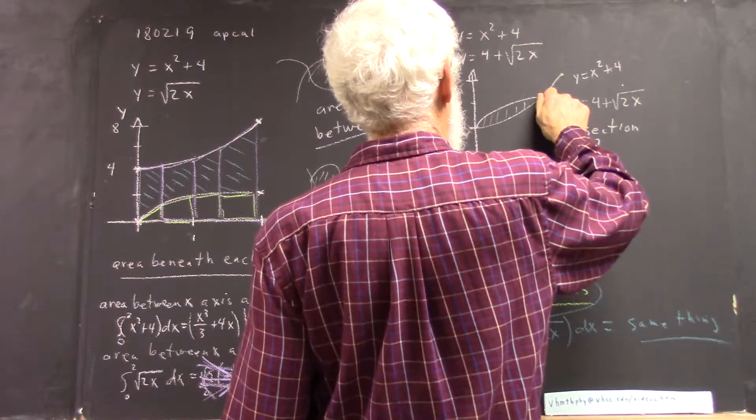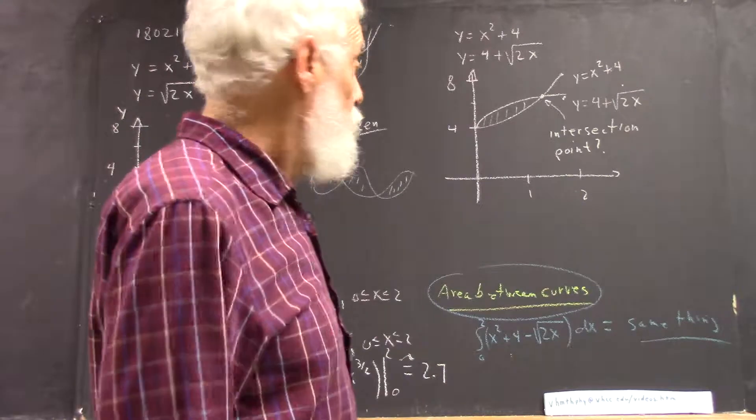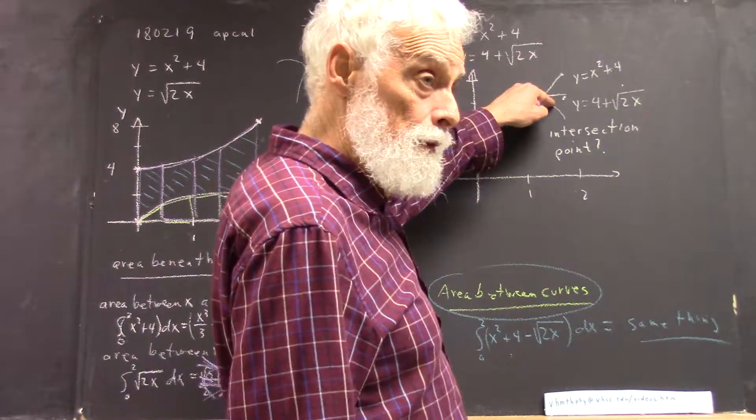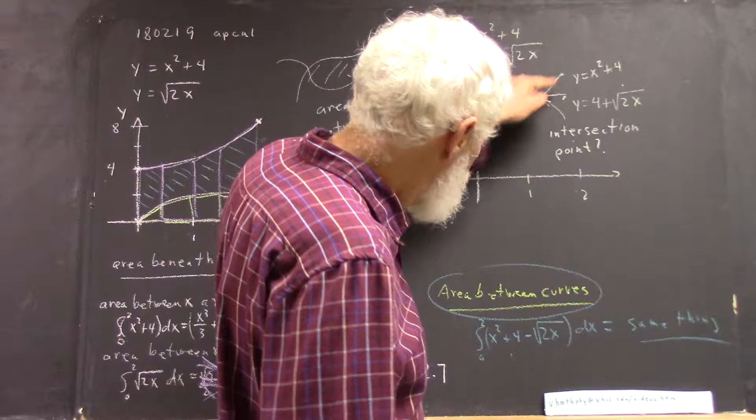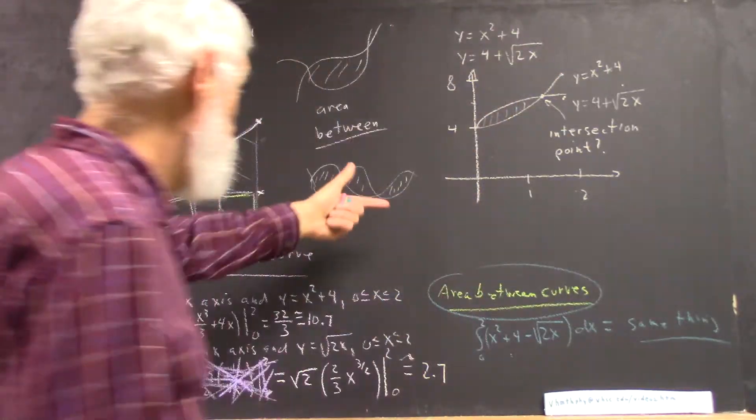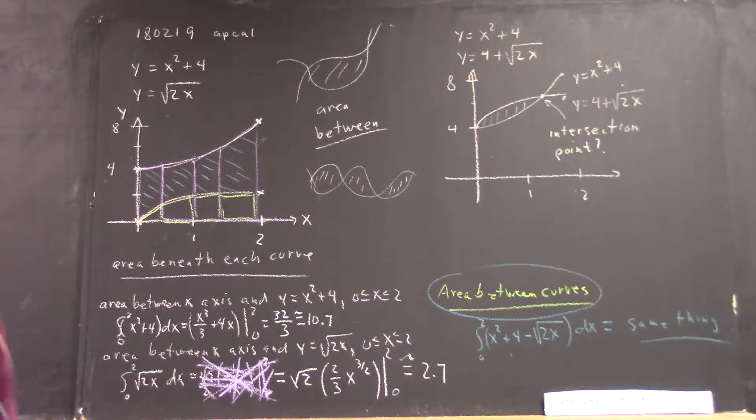Because once we know the intersection point, then we know over what interval to graph this function minus this one. So, we have to work on finding the intersection point.